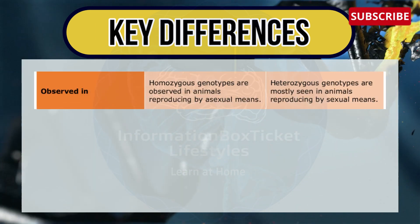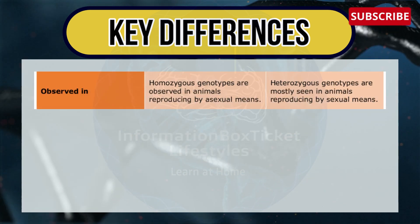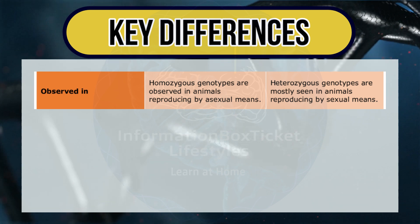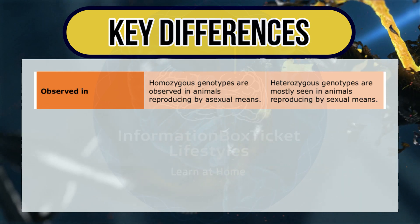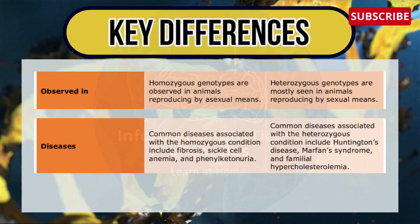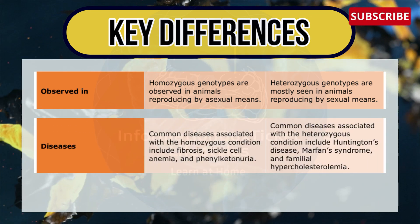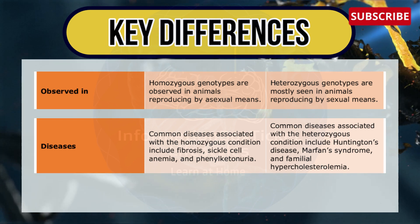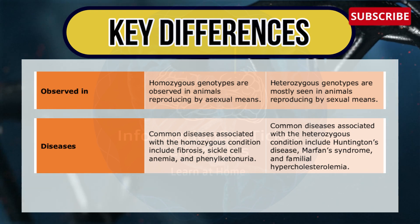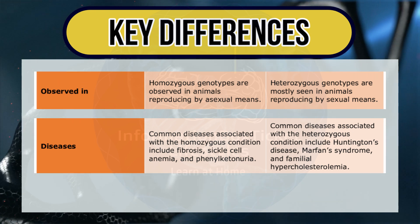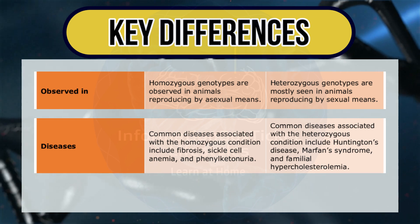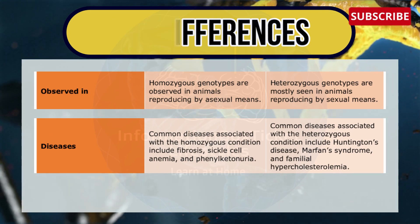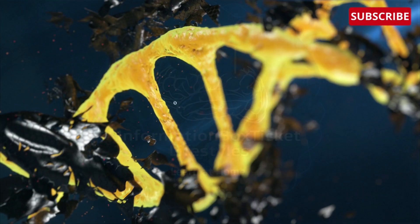Homozygous genotypes are observed in animals reproducing by asexual means, whereas heterozygous genotypes are mostly seen in animals reproducing by sexual means. Common diseases associated with the homozygous condition include cystic fibrosis, sickle cell anemia, and phenylketonuria. Common diseases associated with heterozygous conditions include Huntington's disease, Marfan's syndrome, and familial hypercholesterolemia.